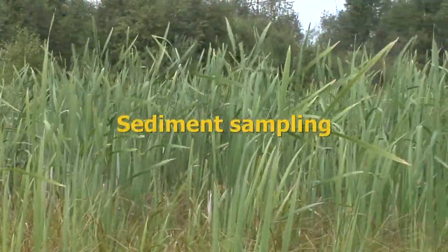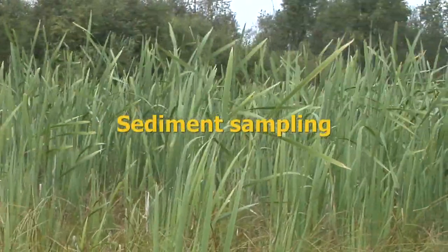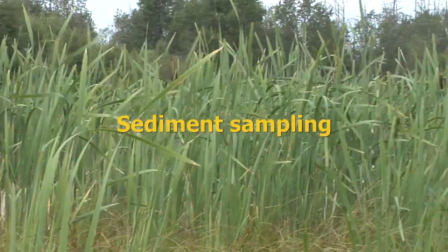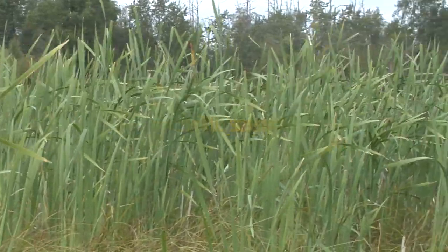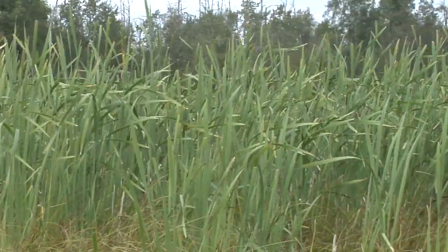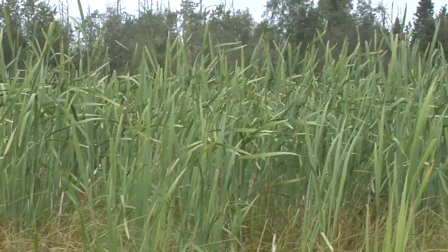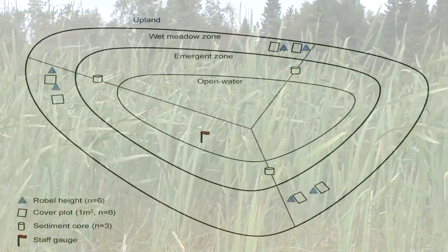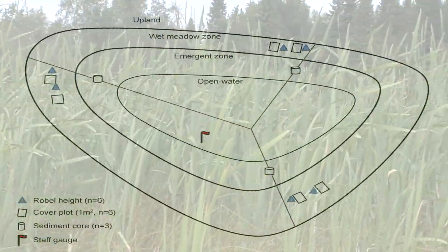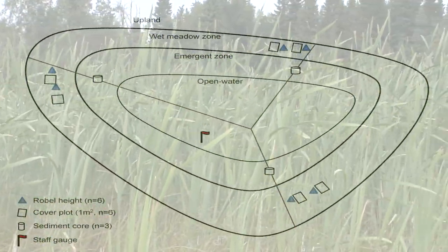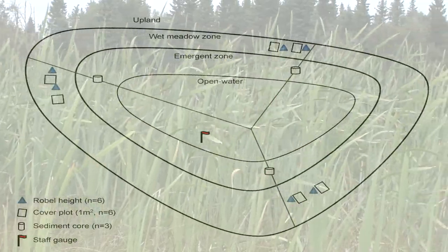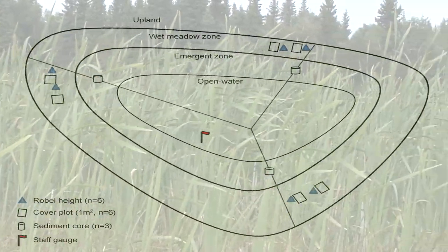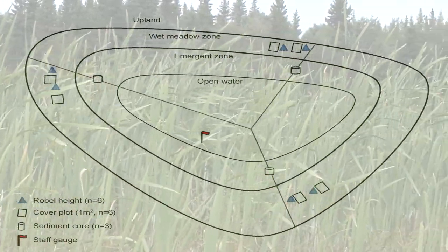Sediment samples are taken from the emergent vegetation zone at three equidistant points around the wetland. You can expedite sampling procedures by taking sediment cores during wet meadow vegetation sampling. If there is no emergent zone present at the wetland, the sediment core can be collected at the edge of the open water.